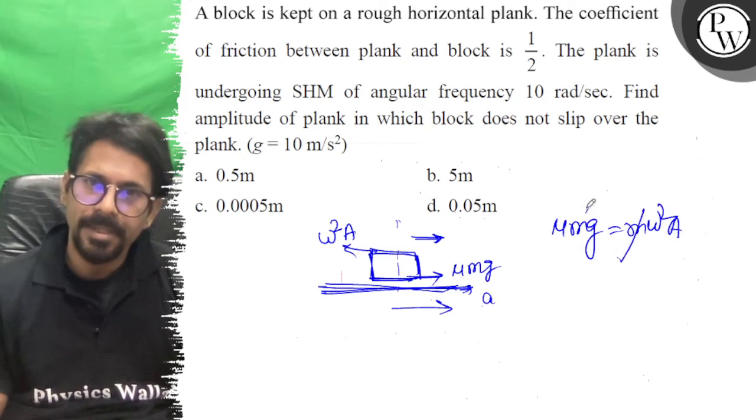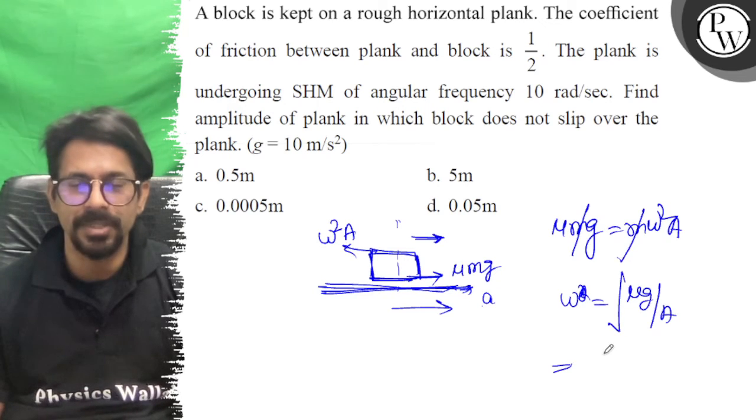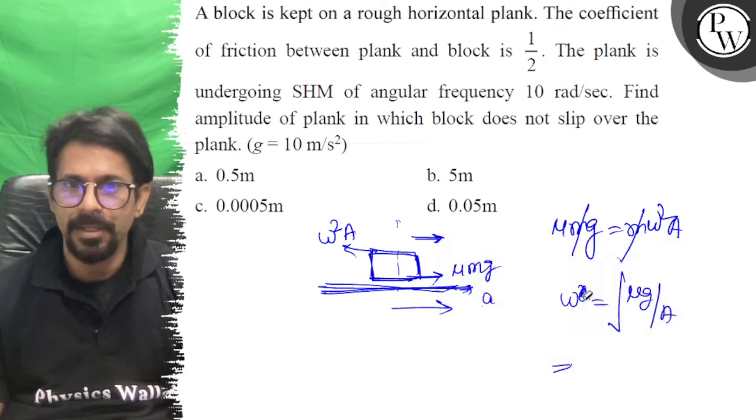M cancels with M, so omega squared equals μG by A. We can take square root and solve for omega, but they're not asking for omega, they're asking for A. Sorry, they're asking for A.